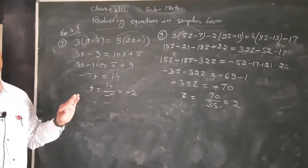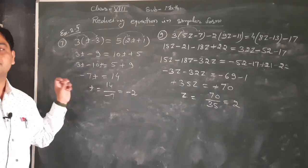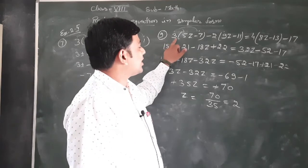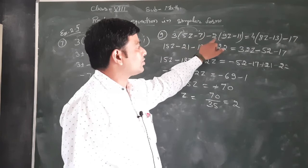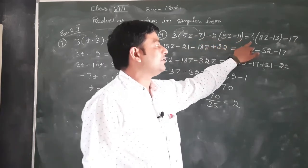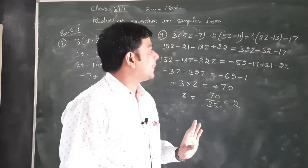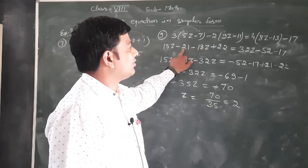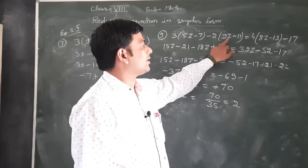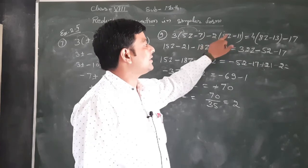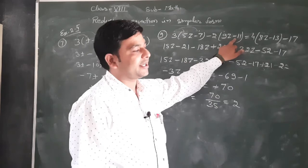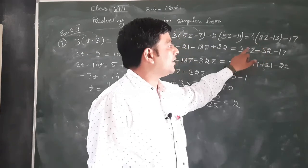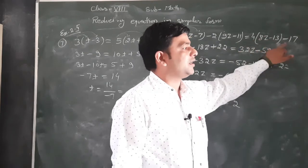Addition या subtraction में लेके जाते हैं तो sign change होता है — positive negative में और negative positive में। So similarly, question number 9: 3(5z - 7) - 2(9z - 11) = 4(8z - 13) - 17। Distribute: 3×5z = 15z, 3×(-7) = -21, minus 2×9z = -18z, minus 2×(-11) = +22. Similarly 4×8z = 32z, 4×(-13) = -52, minus 17 as it is.